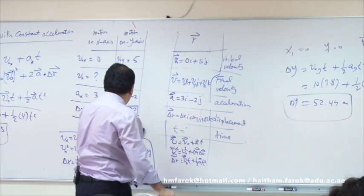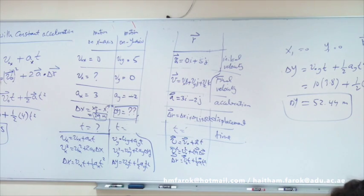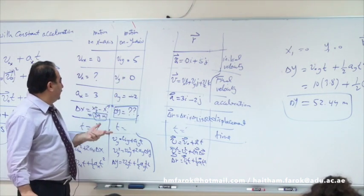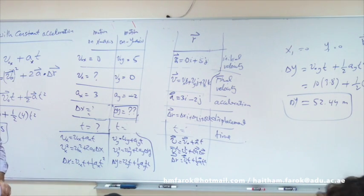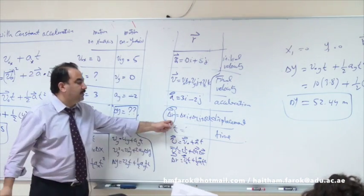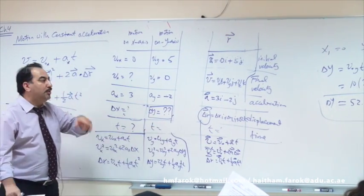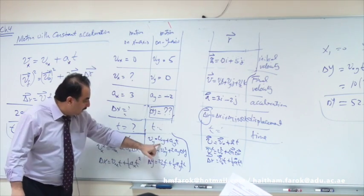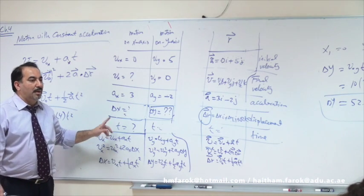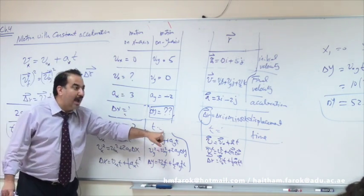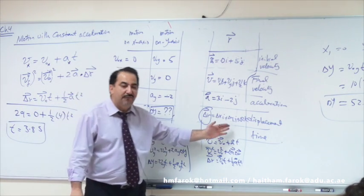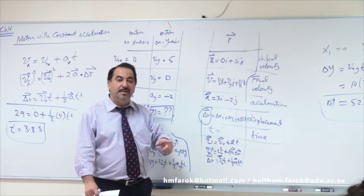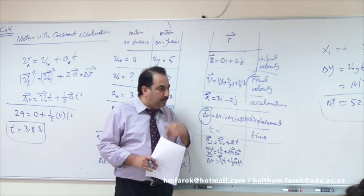Fill the table: V₀x = 0, V₀y = 5; ax = 3, ay = −2; Vy = 0 (at max y). The y column has three knowns, so start there. Find Δy using y equations, and also find the time from the y column. Transfer time to the x column. Find Δx. Then compute the displacement vector Δr and its magnitude — that's how far from the origin. We'll continue next class.